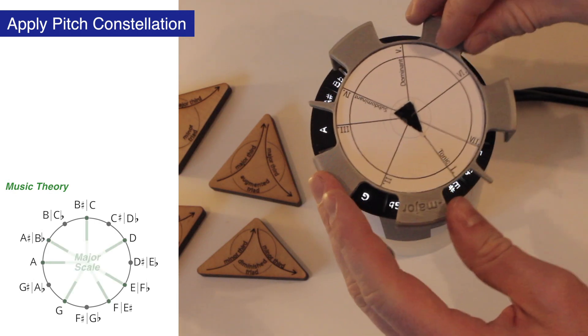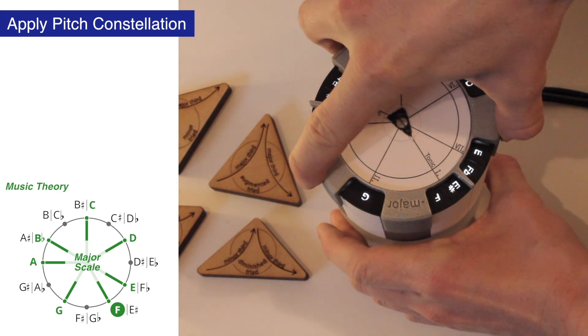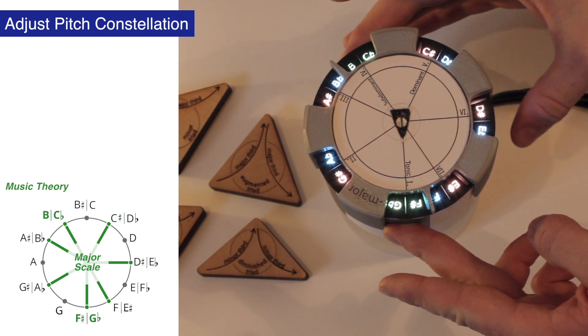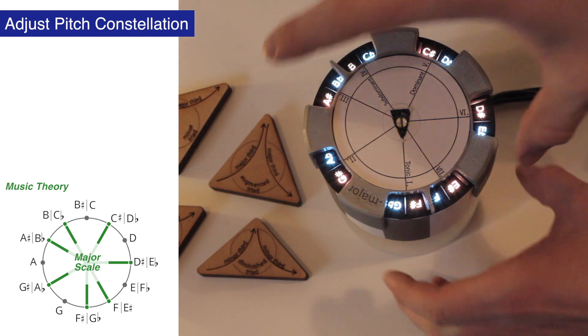The cap physically covers all nodes outside the major scale with extruded circular segments and can be rotated in 12 discrete positions. Every position represents a key signature in which the respective notes or even notes outside the scale can be played by touch.